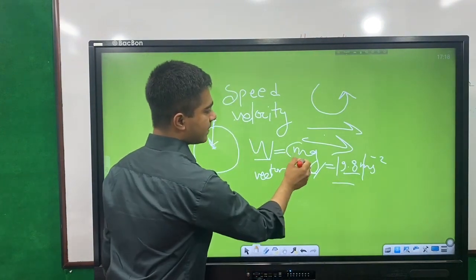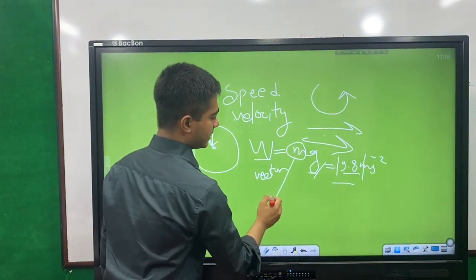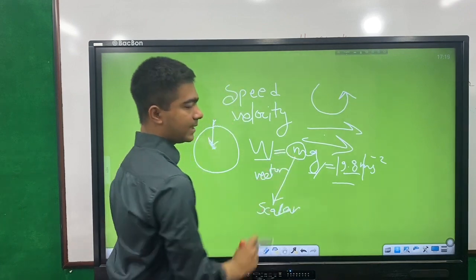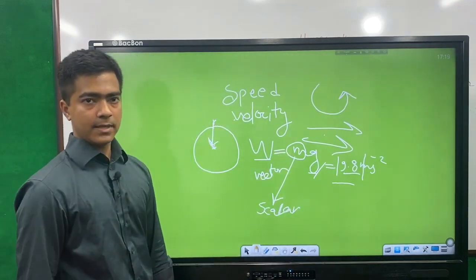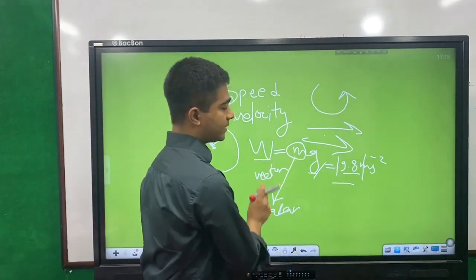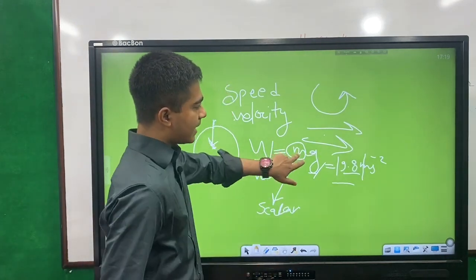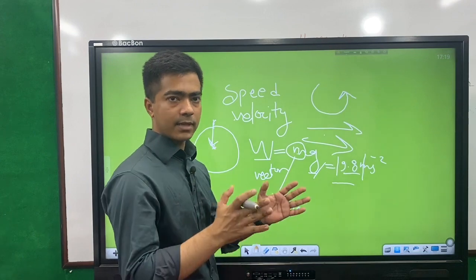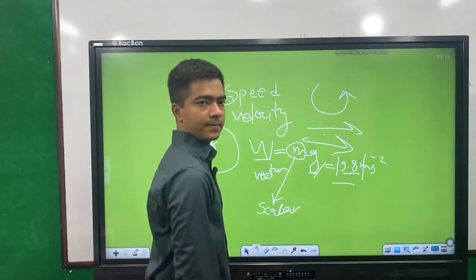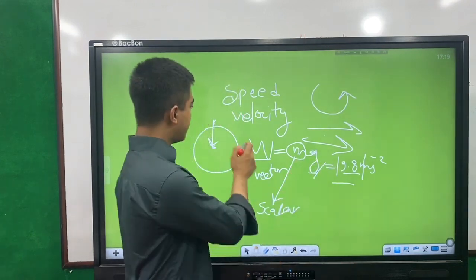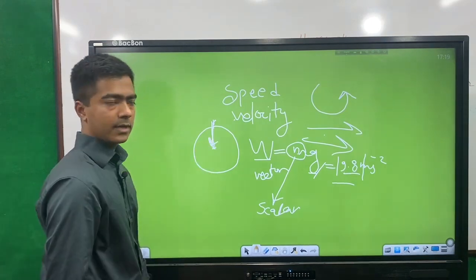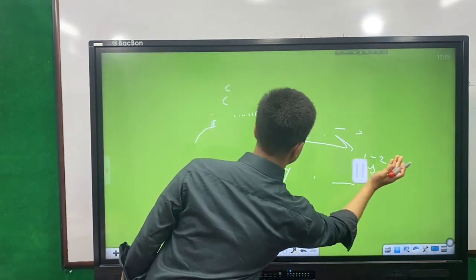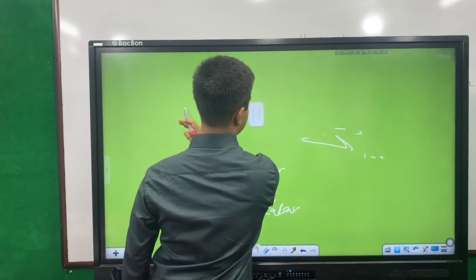The aim is the scalar quantity. If you have a vector quantity, you can see that vectors have both direction and magnitude. Scalars only have a value. The direction component is what makes g a vector.